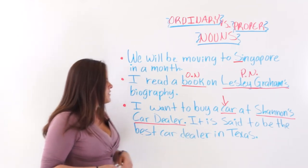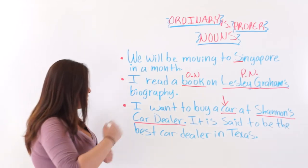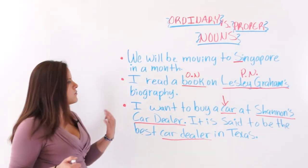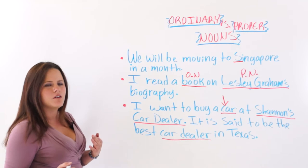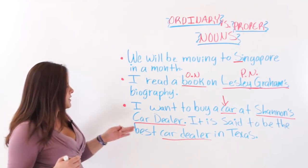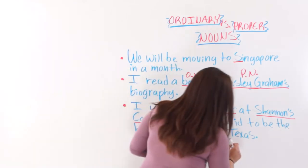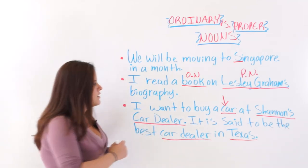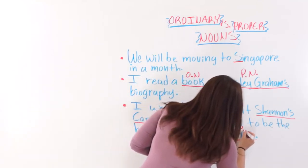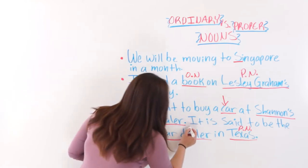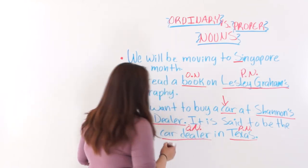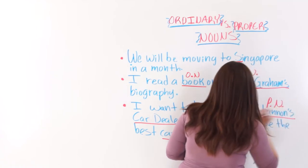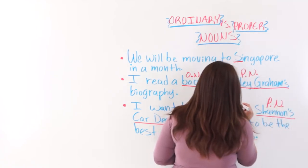The next example: 'It is said to be the best car dealer in Texas.' 'Car dealer' is not a proper noun because we are talking about a general place. 'Texas' is a proper noun because we are talking about a specific place. So 'car dealer' is an ordinary noun, and 'Texas' is a proper noun.